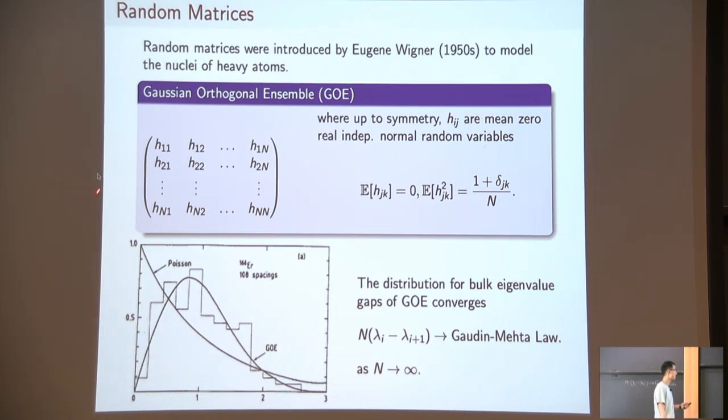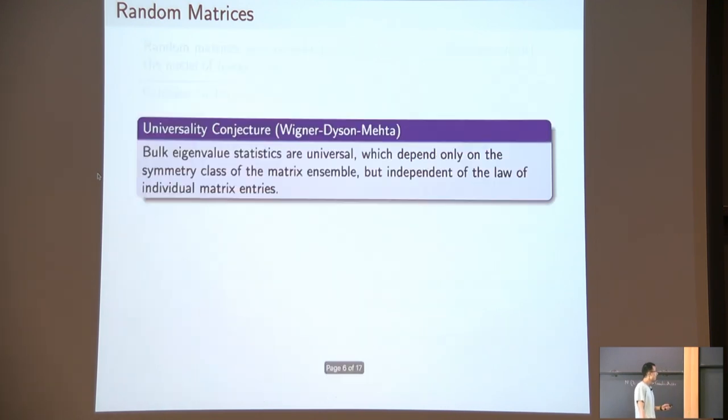Here, this matrix ensemble has Gaussian entries. You may wonder what will happen if we replace those entries by some other distributions, like by the Bernoulli distribution, which takes value plus one and minus one each with probability half. Does this matrix ensemble still match with the experimental data? It turns out Wigner thought about the same question together with another physicist Dyson and the mathematician Mehta. They formulated this bulk universality conjecture.